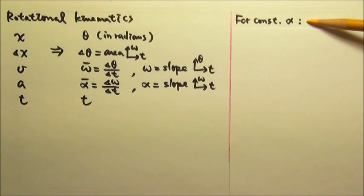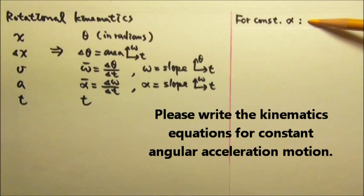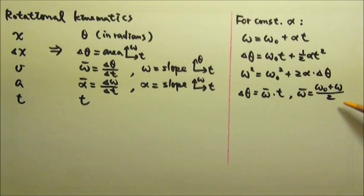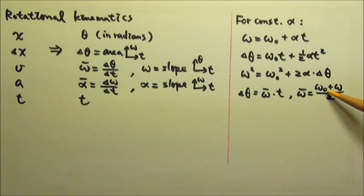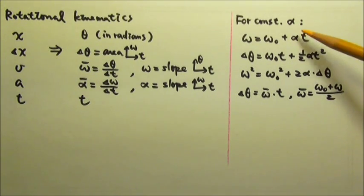Now let's see if you can write the kinematics equations for constant angular acceleration motion. Here they are. Remember that the average angular velocity is the average of the initial and final angular velocities only if it's a constant angular acceleration motion.